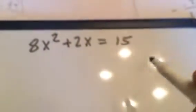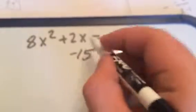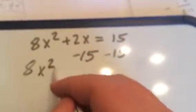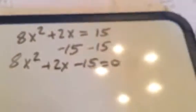Solve the quadratic equation. We need to get a 0 first, so I'm going to subtract 15 from both sides. We'll get 8x squared plus 2x minus 15 equals 0. Now we have our 0.